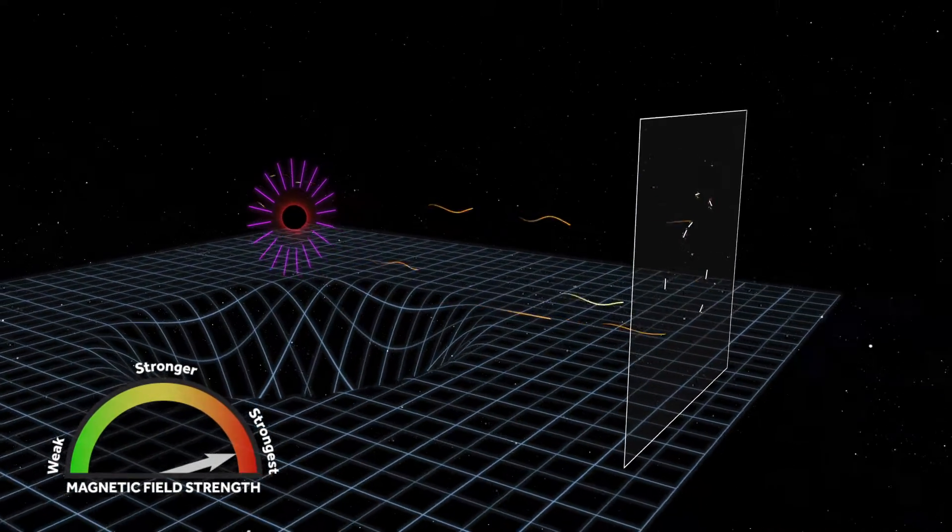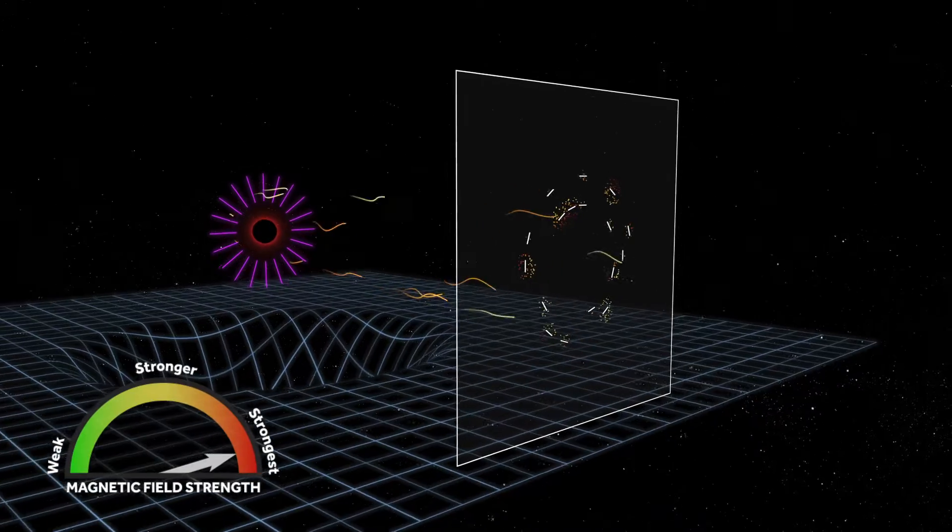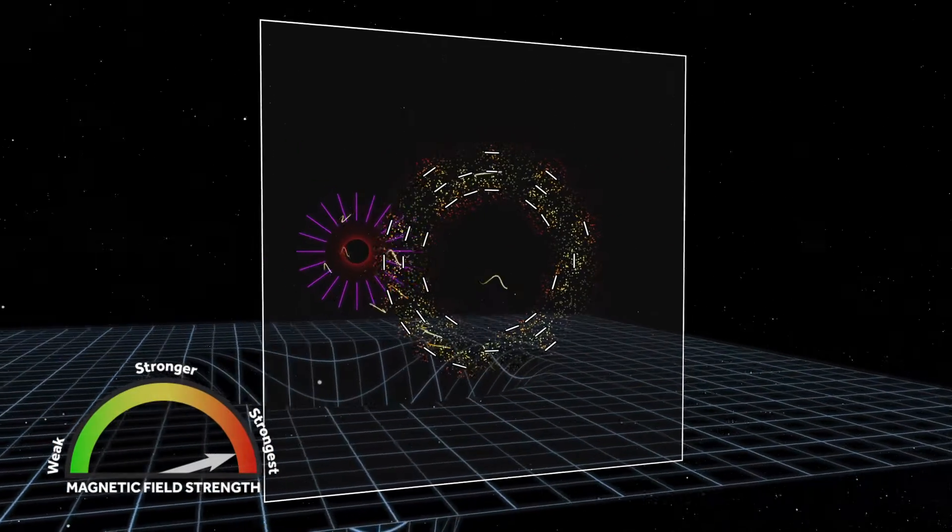When we produce a black hole image, the polarized light waves now exhibit a different pattern.